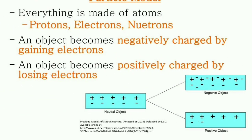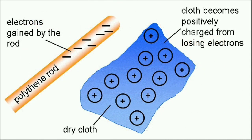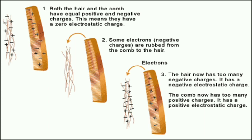All matter, being made of neutral atoms, is neutral by nature. If two neutral objects come into contact, there will be an exchange of charges. An object which gains electrons becomes negatively charged and an object which loses electrons becomes positively charged. For example, when a dry cloth and a polythene rod are rubbed against each other, the polythene rod gains electrons and becomes negatively charged while the cloth loses electrons and becomes positively charged. Similarly, when a comb and hair are initially neutral, combing causes transfer of charges — the hair gaining electrons becomes negatively charged and the comb losing electrons becomes positively charged.